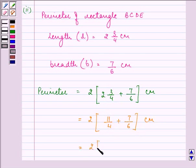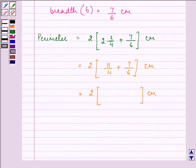Now we need to add these 2 unlike fractions by taking the LCM. The LCM is 12. So we know that 4 into 3 is 12, so we will multiply the numerator that is 11 also by 3 to get 33 plus 6 into 2 is 12, so 7 into 2 is 14.